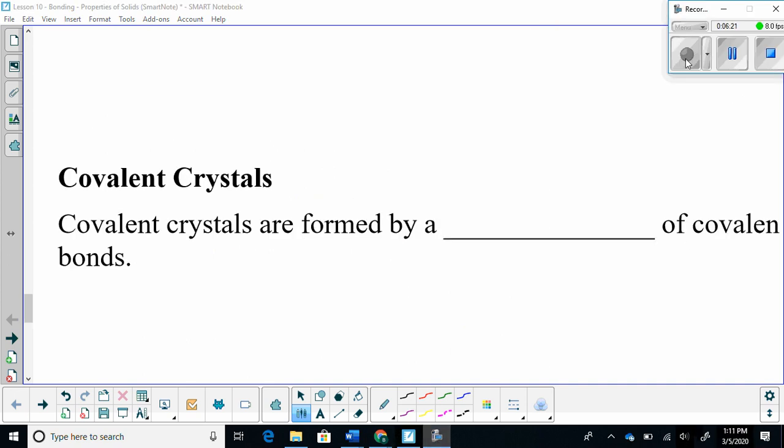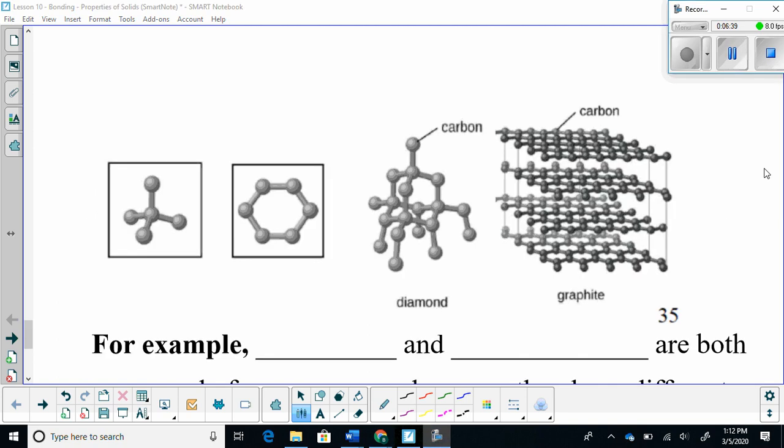Covalent crystals are formed by a network of covalent bonds. So what happens is those types of bonds, the covalent bonds, form multiple bonds to create a network. For example, here I have a diagram of diamond and graphite. So let's compare. Let's look at some things that we notice about the structure of carbon.